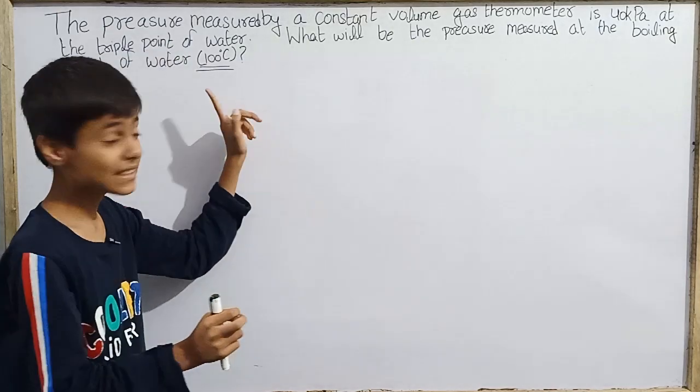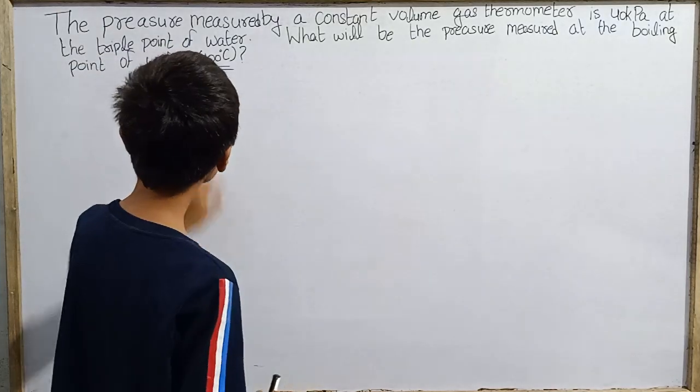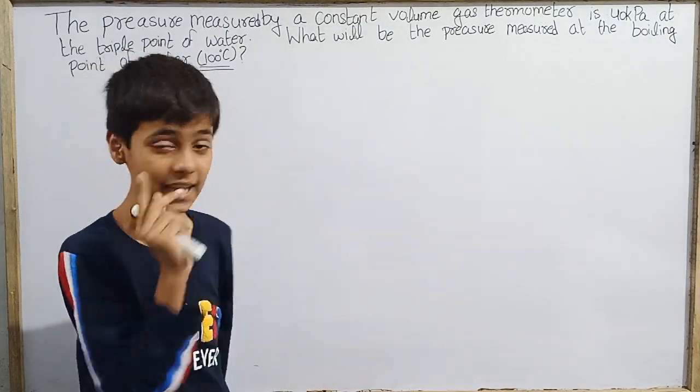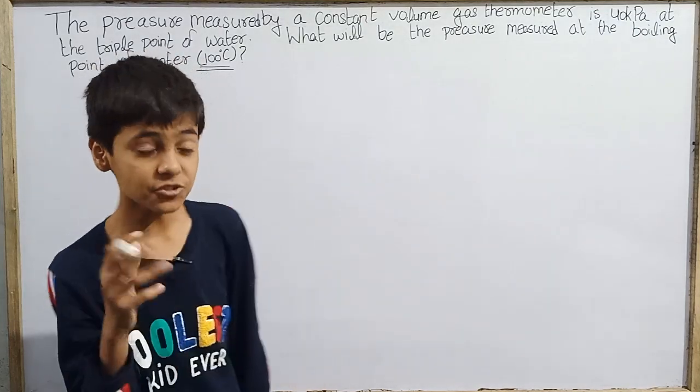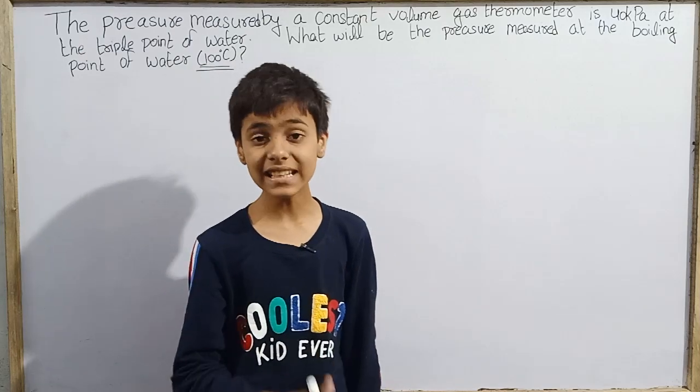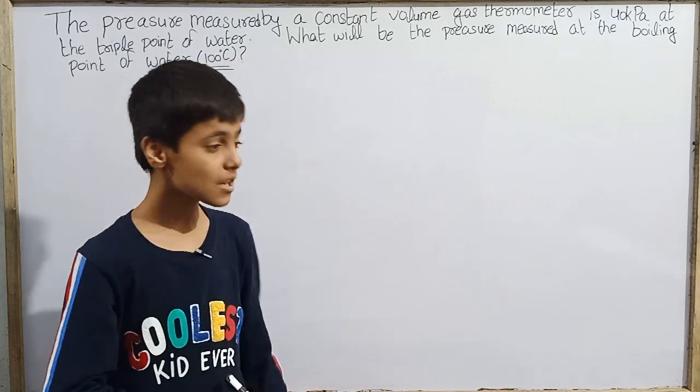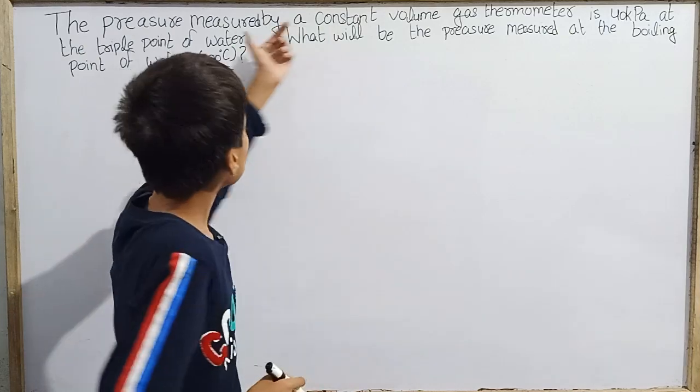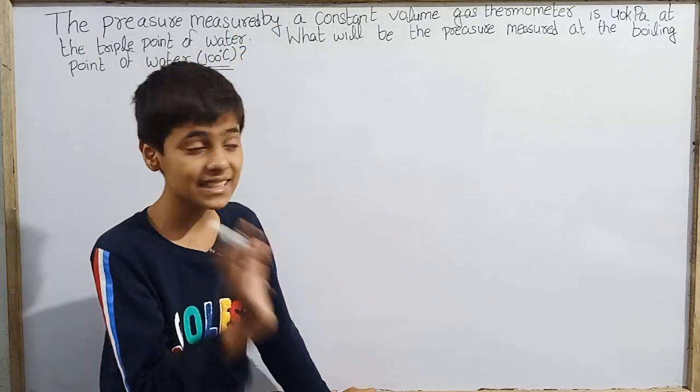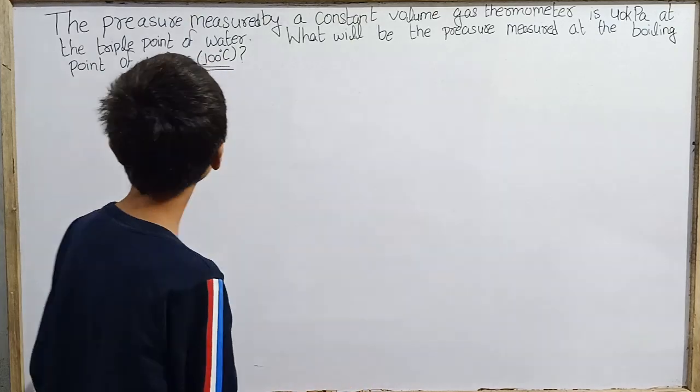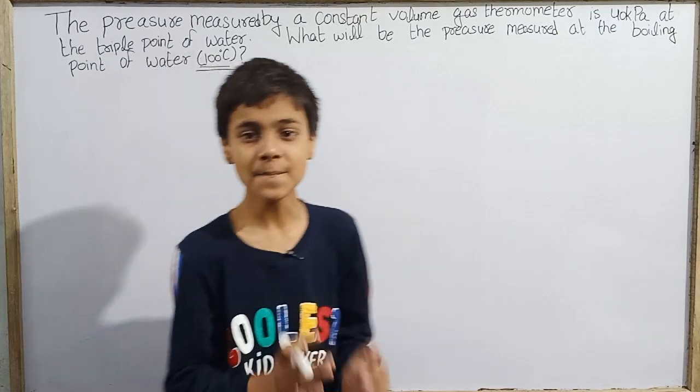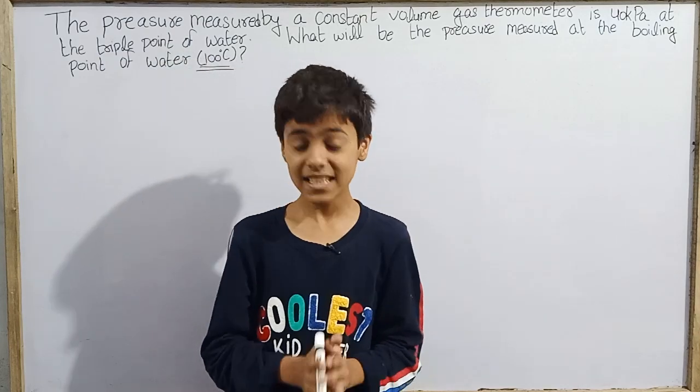What will be the pressure measured at the boiling point of water, 100 degrees Celsius? Here we have given this question that I have a constant volume gas thermometer. Now it has triple point of water, or at 273.16 Kelvin, it has measured the pressure of the gas that was 40 kilopascals.